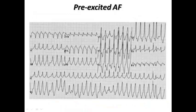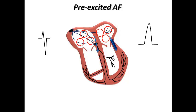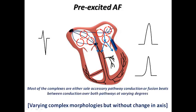What do we mean by fusion beats? In patients with an accessory pathway and AF, some beats may be transmitted through the AV node, some wholly through the accessory pathway — resulting in a wide complex because conduction passes through ventricular muscle fibers, which are slow — and some are fusion beats between AV conduction and accessory pathway. In pre-excited AF, most complexes are either sole accessory pathway conduction or fusion beats, resulting in slight variation in the complex morphology but without change in the axis.